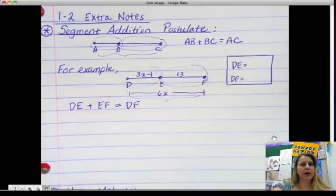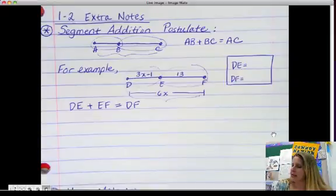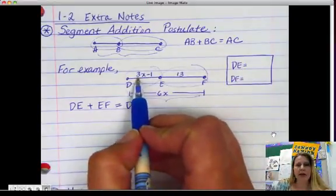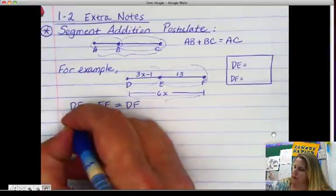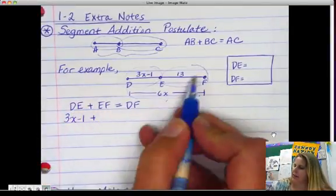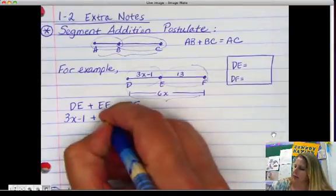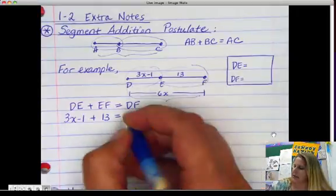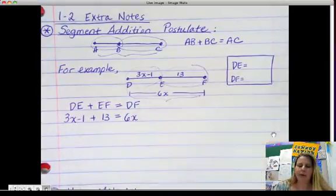Now all you need to do is just plug in what these things are. So DE is the same as 3x minus 1. So we're going to write that, 3x minus 1 plus EF is the same as 13. Equals DF is the whole amount, so that's 6x. Now we're going to solve for x.